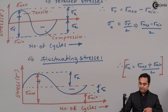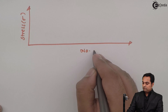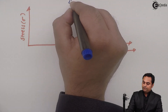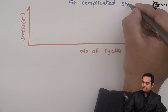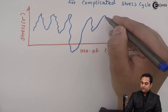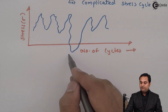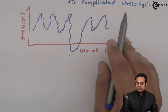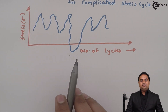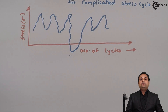The next type is the complicated stress cycle. Here the stress nature is wayward — it does not follow a continuous path. The stress goes on increasing and decreasing in an irregular manner that cannot be solved by any standard formula. Aircraft wings are mostly subjected to the complicated stress cycle. In this video we have seen what is meant by fatigue failure and the various graphs related to stress and number of cycles.